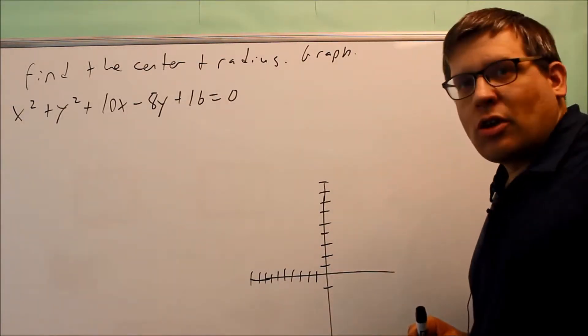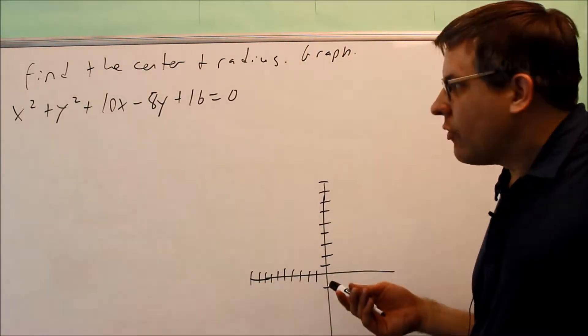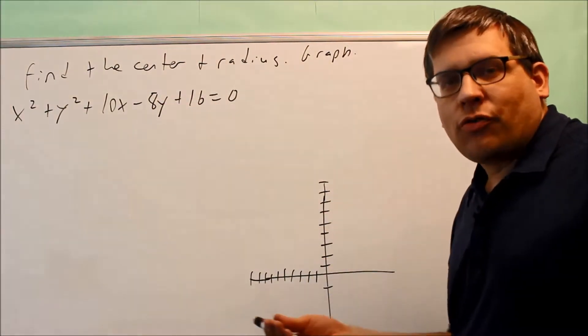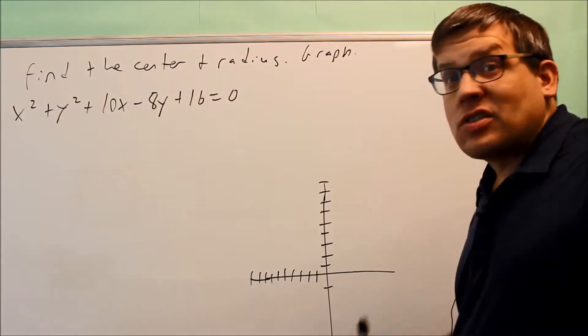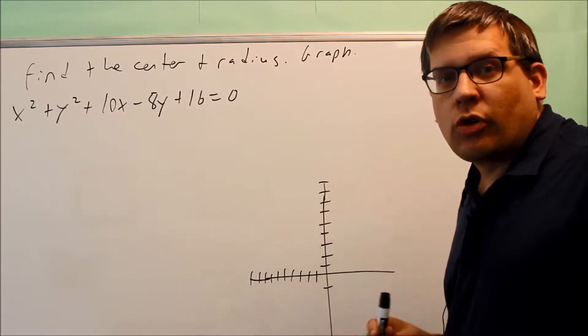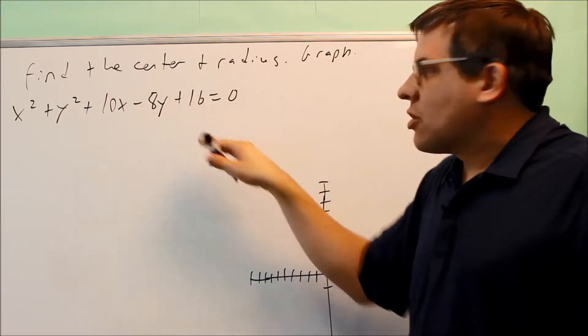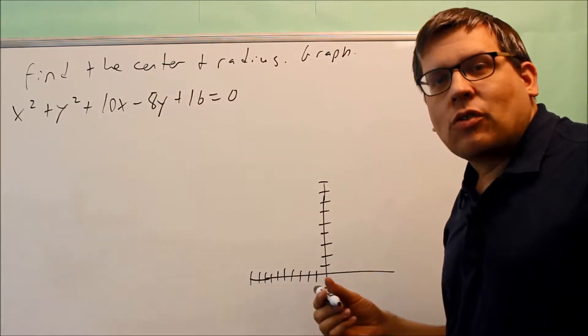For this problem, we want to find the standard form and radius and also the graph. However, what we notice about this is this is not written in the standard form. So because it's not, that means I can't tell right away what the standard form and radius is going to be. So I need to do something to this equation to get it into the standard form.